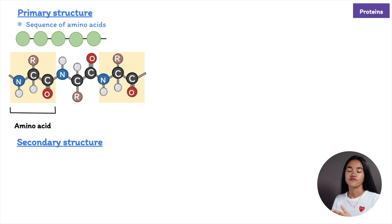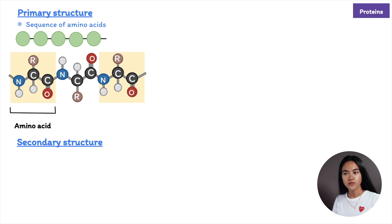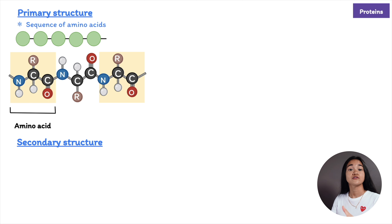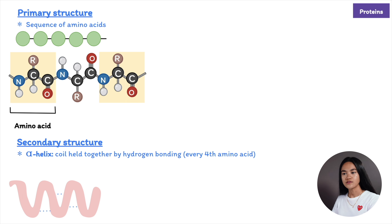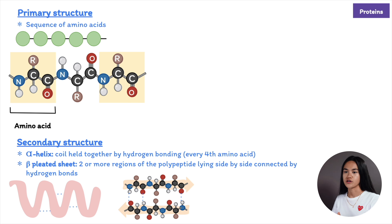The secondary structure involves coiled or folded patterns in the polypeptide chains. Within the backbone, oxygen atoms have a partial negative charge and hydrogen atoms attached to nitrogens have a partial positive charge, so they form hydrogen bonds. Though hydrogen bonds are weak, because there are so many of them they support a particular shape for that part of the protein. The first type of secondary structure is an alpha helix — a coil held together by hydrogen bonding between every fourth amino acid. The second is a beta pleated sheet, where two or more regions of the polypeptide lie side by side as beta strands connected by hydrogen bonds.